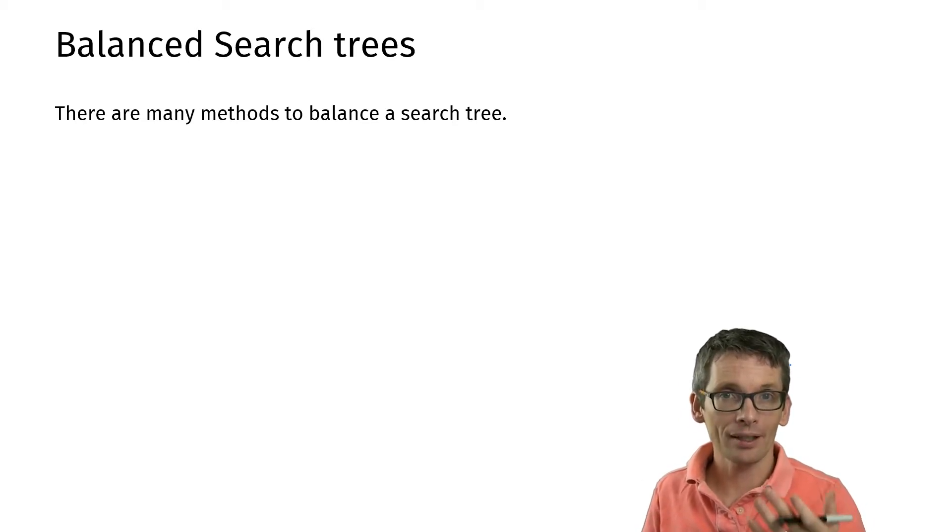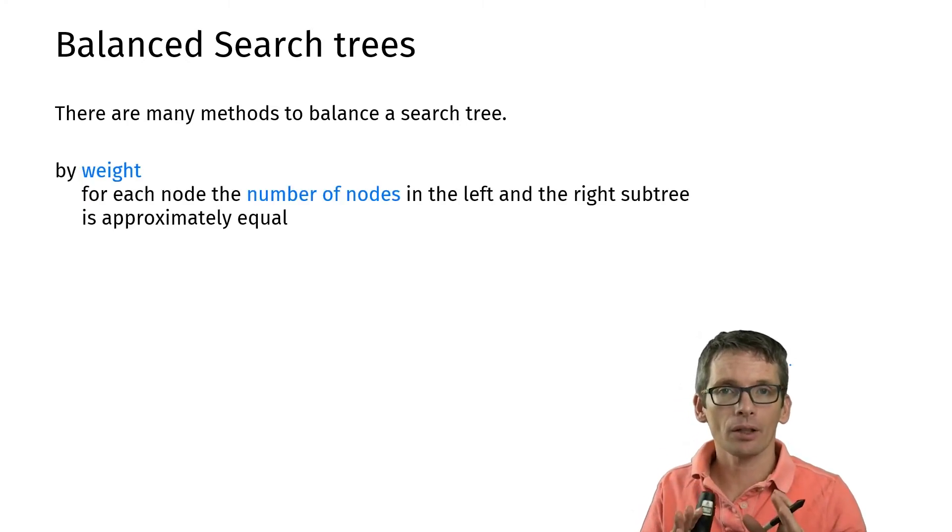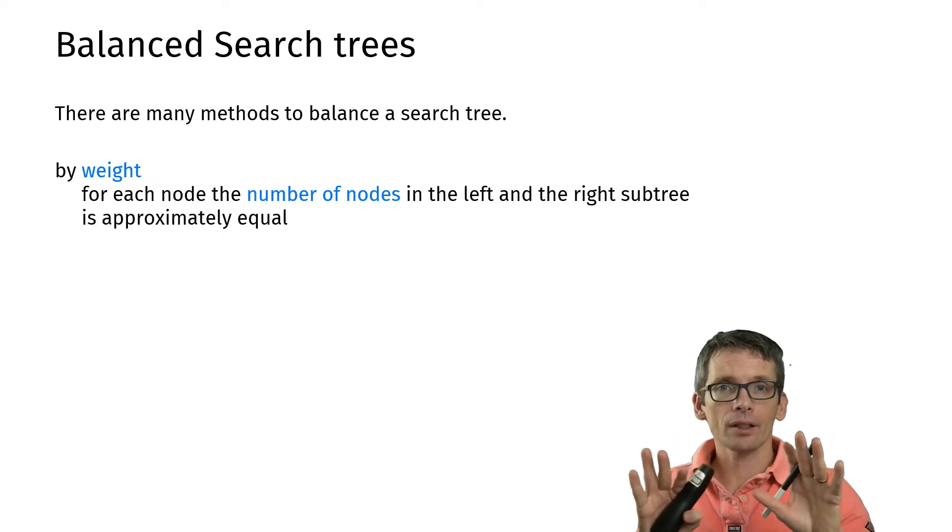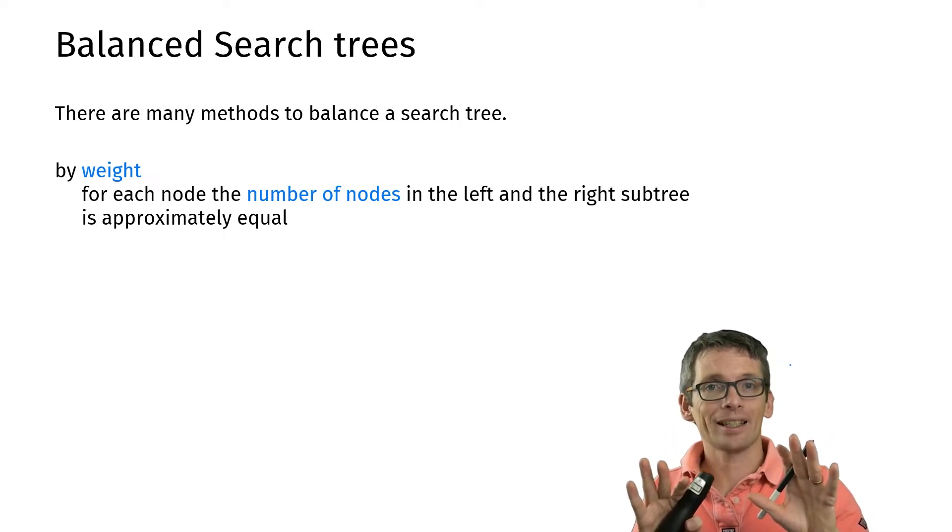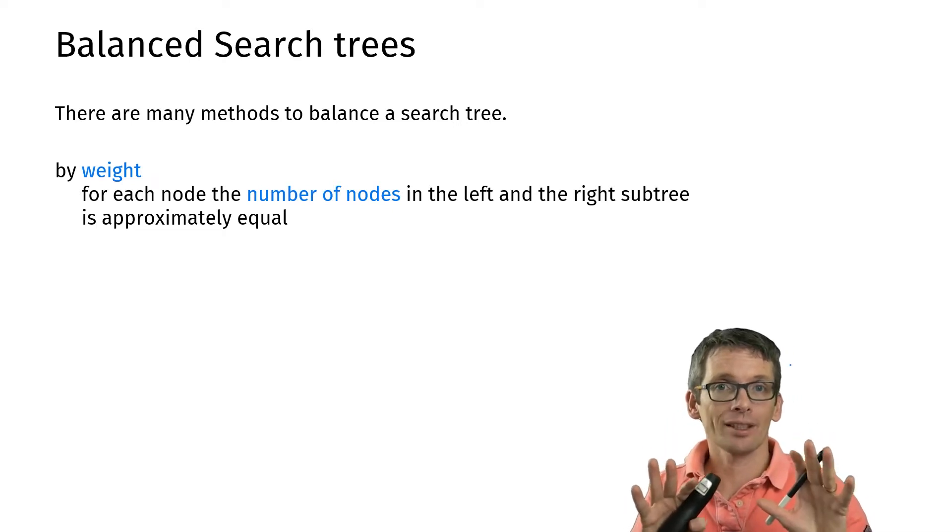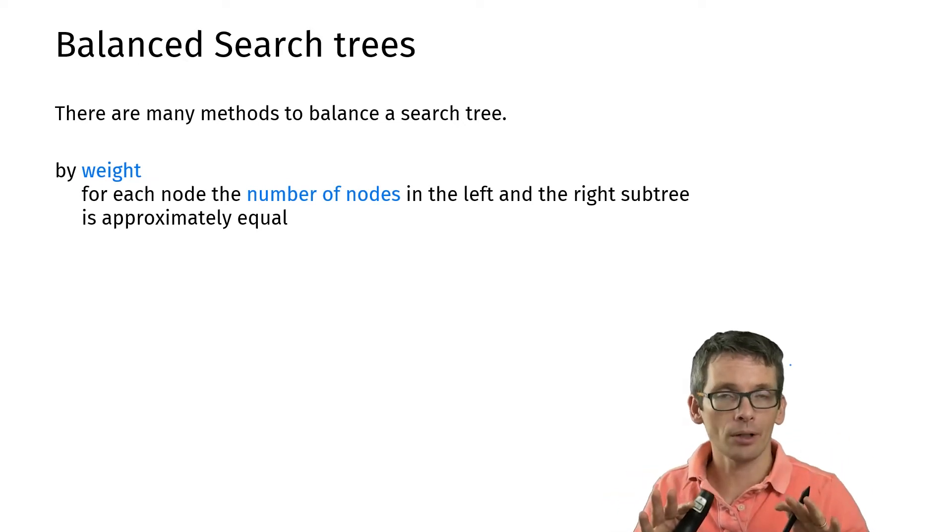In general, methods for balancing search trees fall into one of the following categories. By weight means that I want to make sure that the left and the right subtree always have more or less the same number of nodes, so the same size, and I want to have that for all nodes in my search tree.